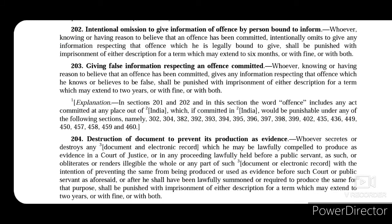Section 202 talks about intentional omission to give information of an offence by a person bound to inform. Whoever, knowing or having reason to believe that an offence has been committed, intentionally omits to give information respecting that offence which he was legally bound to give, shall be punished with imprisonment for a term which may extend to 6 months, or with fine, or with both. Section 203 deals with giving false information respecting a committed offence — he shall be punished with imprisonment for a term which may extend to 2 years, or with fine, or with both.